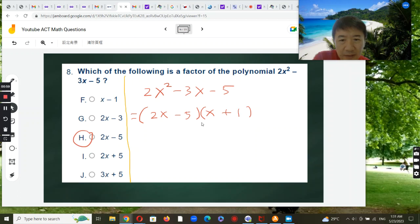With some trial and error, you'll see that +5 and -1 won't get us -3x. If you put in +5 and -1,